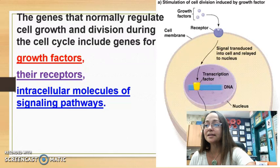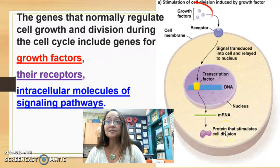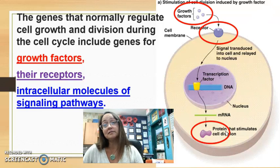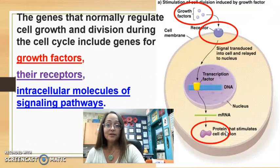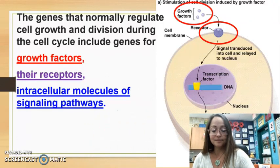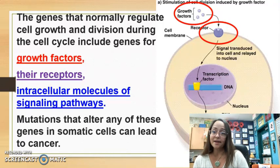So it could be the growth factors, it could be the receptor, or it could be the protein that stimulates the cell to divide. Mutations that alter any of these genes in somatic cells are what can lead to cancer.